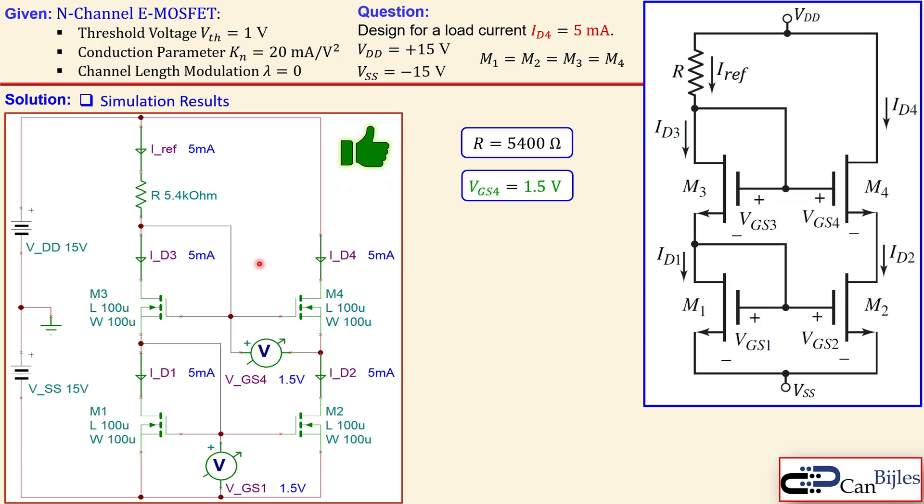Alright, this was our example about the cascode configuration of the MOSFET current source. We have discussed how we can determine the gate-to-source voltages, and from there the required resistor value for this design. If you have any questions or comments about this example, please let me know and I will try to answer them as soon as possible.